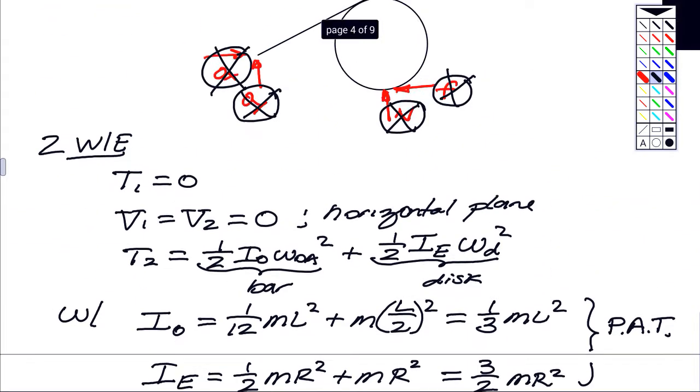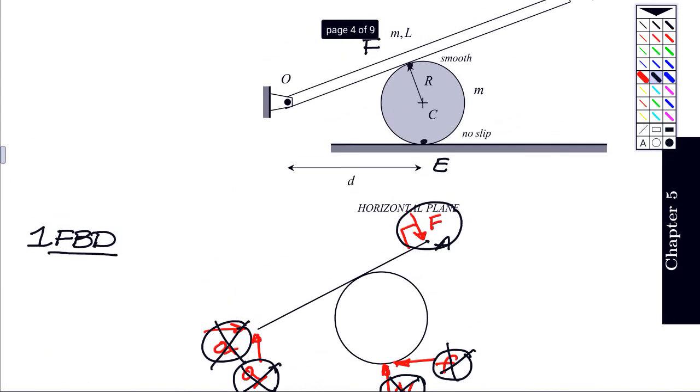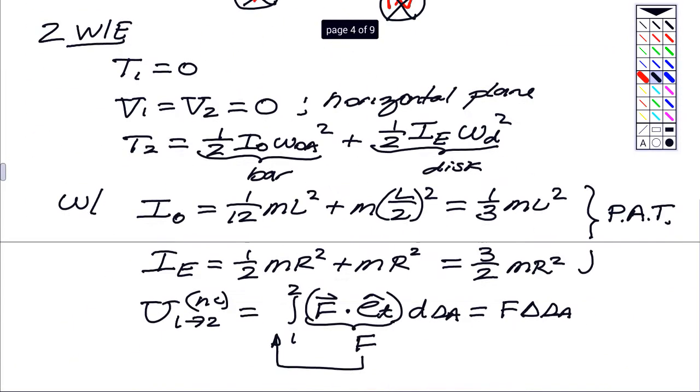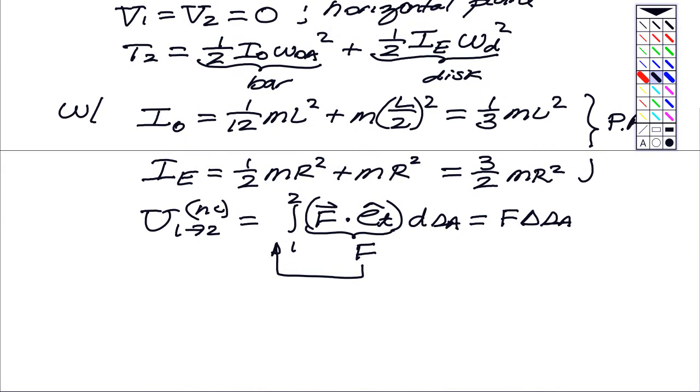Let me come back up here and define the angle theta. Theta is this here. So again, since the bar OA is rotating about O, we can say that the distance that's traveled by A is going to be the distance L times the change in angle of that bar. So it's the initial theta minus the final times L, F, with a plus sign in front.